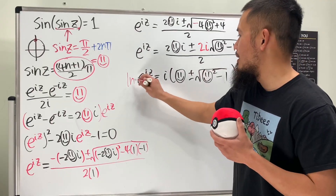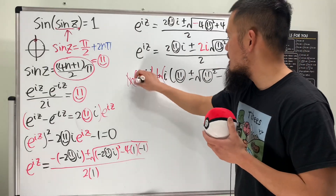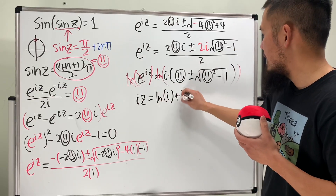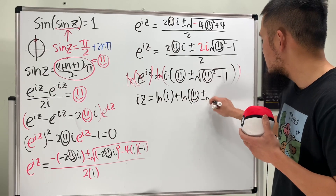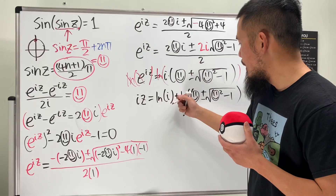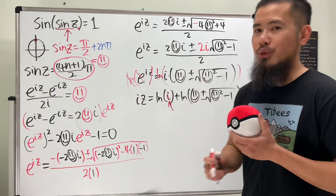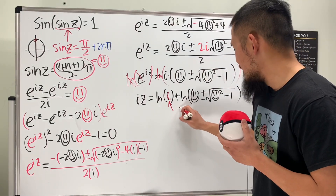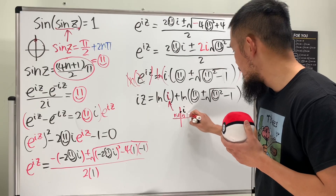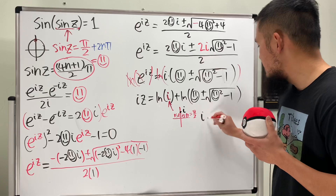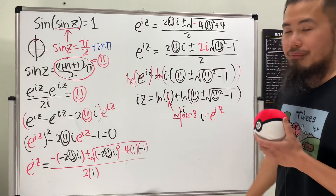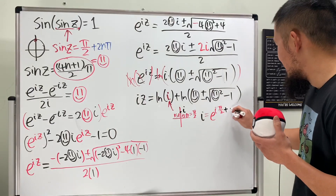Taking the natural log of both sides: iz = ln(i) + ln(happy_face ± √(happy_face² − 1)). To compute ln(i): on the complex plane, i has modulus one and angle π/2, so i = e^(i·π/2 + 2nπ·i), giving ln(i) = i·(π/2 + 2nπ) = i·(4n+1)/2 · π.